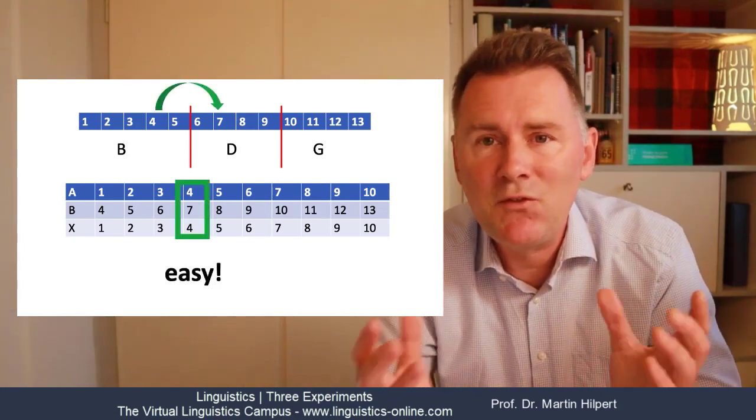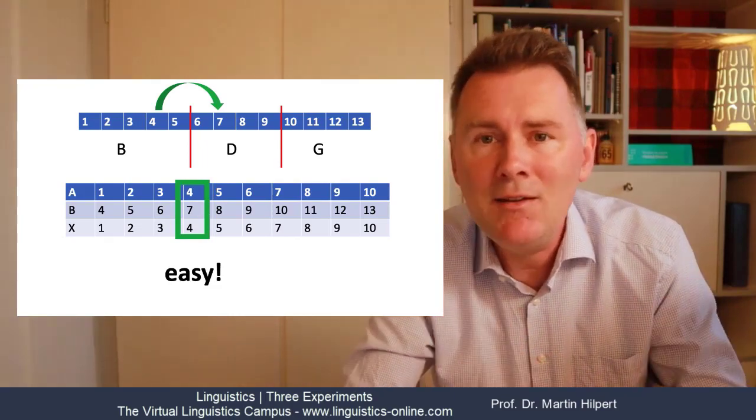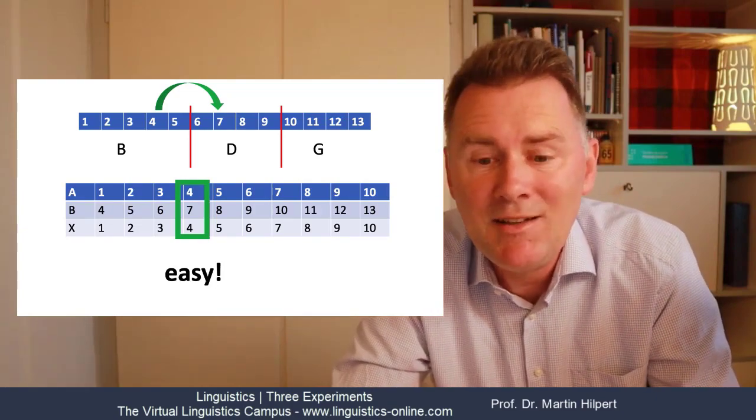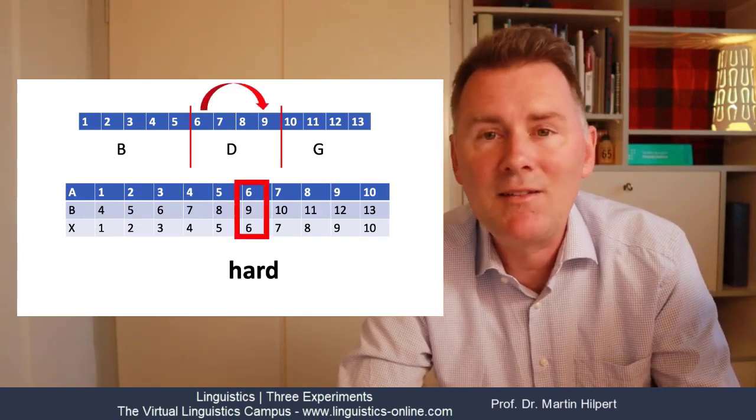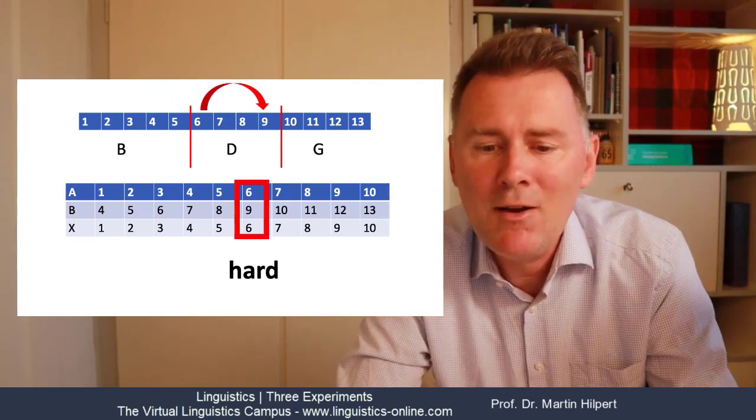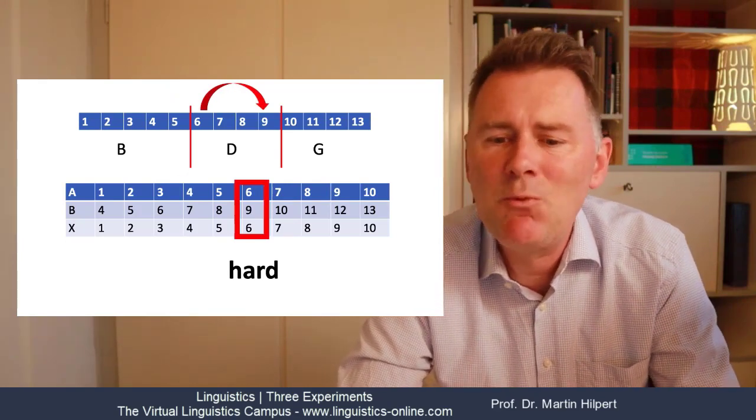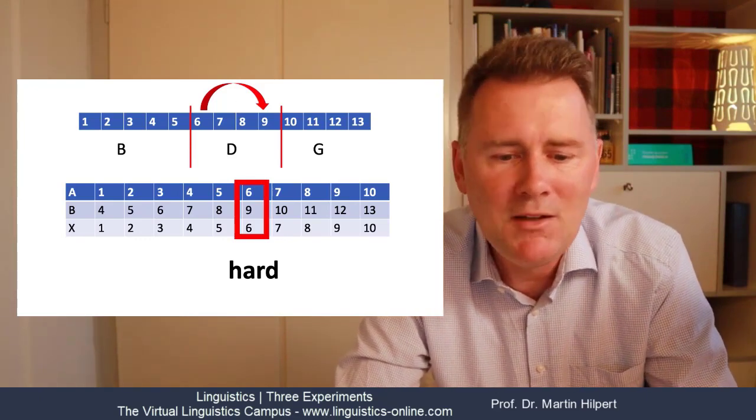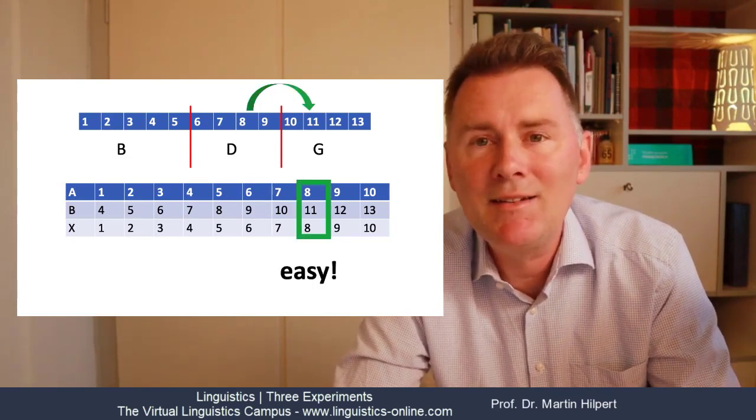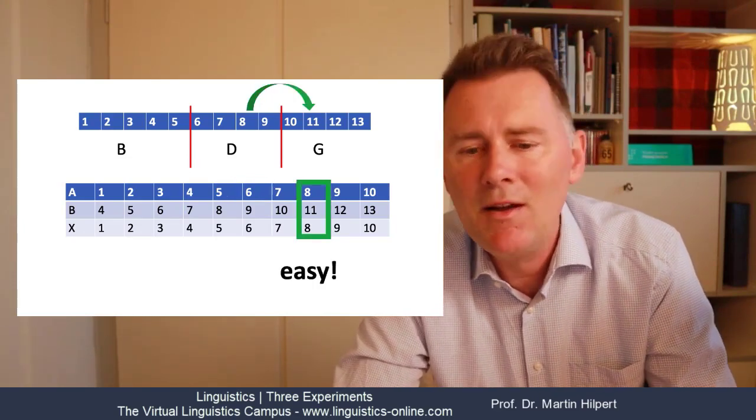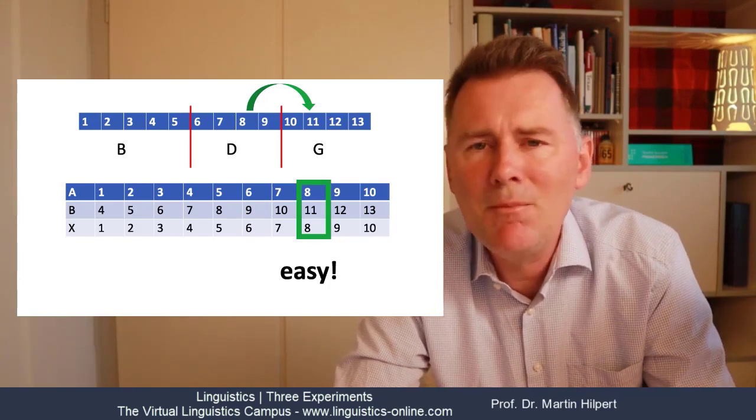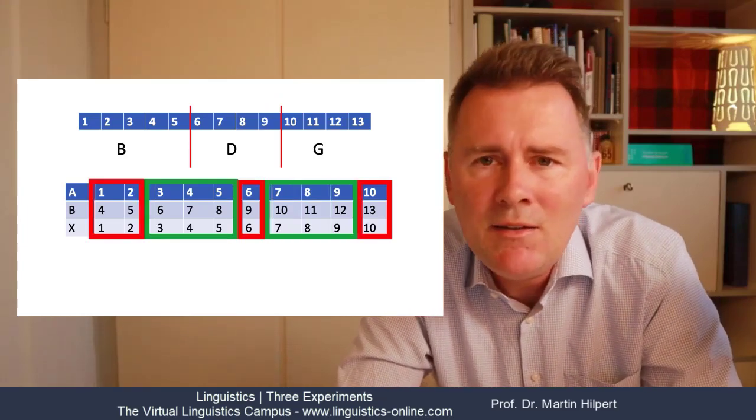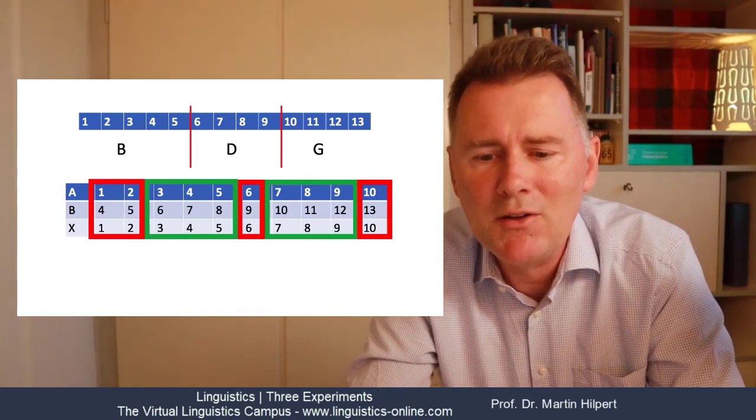For example, if we have steps four and seven, A sounds like B and seven sounds like D, so it should actually be easy to distinguish the two. By contrast, step six and step nine both sound like D, so there it should be quite hard to say if X sounds identical to A or identical to B. Moving on, step eight sounds like D and step 11 sounds like G, so that should again be relatively easy. What this means is that there are some combinations that are easy and some combinations that are more difficult and this is shown in this graph from the study where the authors contrast their predictions and their actual observations.